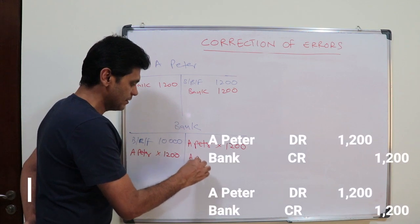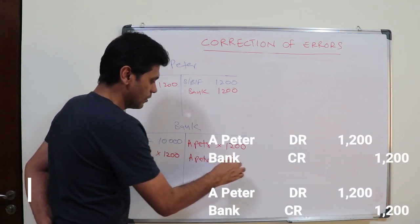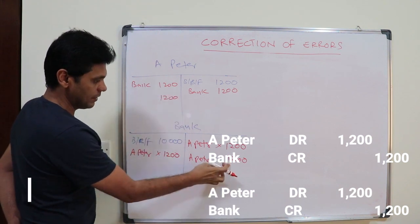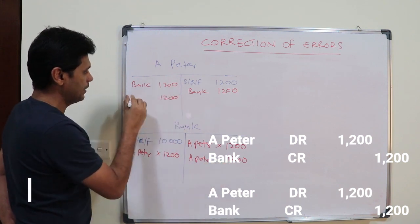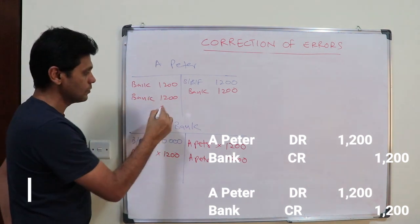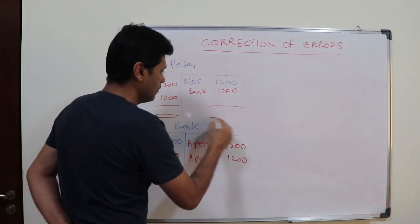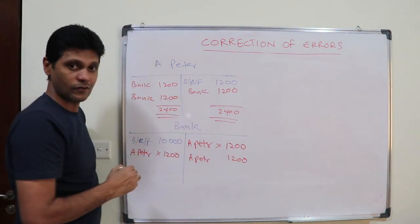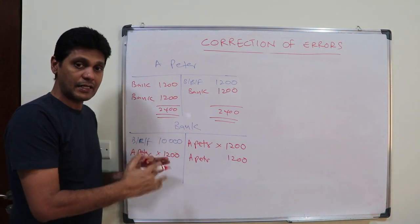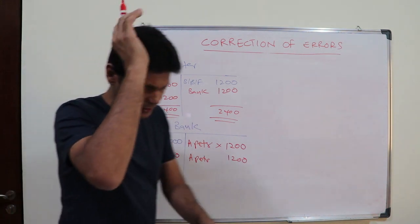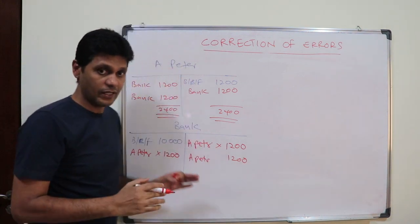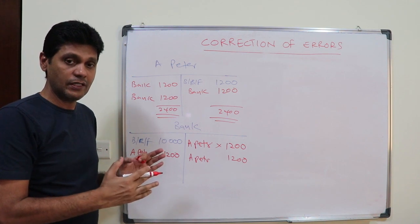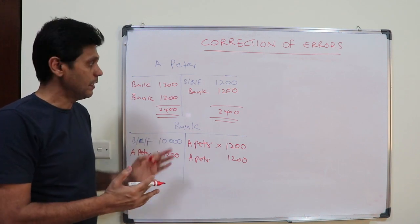The entry is: debit A Peter one thousand two hundred, credit bank one thousand two hundred. Thereby the balance becomes zero — there is no outstanding balance. For a reversal of entry error, you need to do the transaction twice — the same transaction has to be repeated in order to make the balance zero.